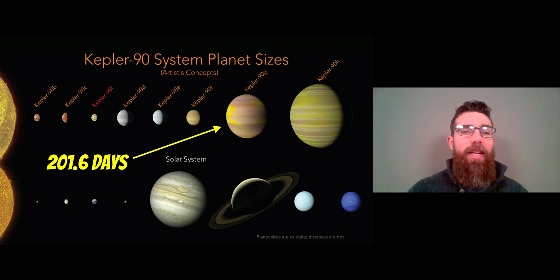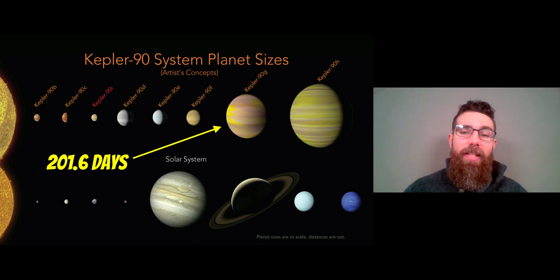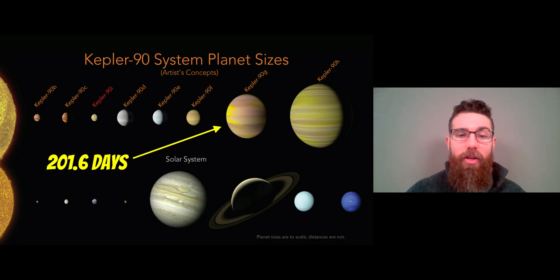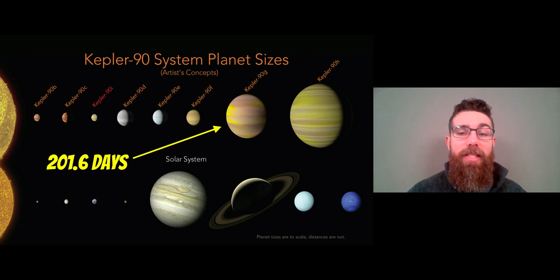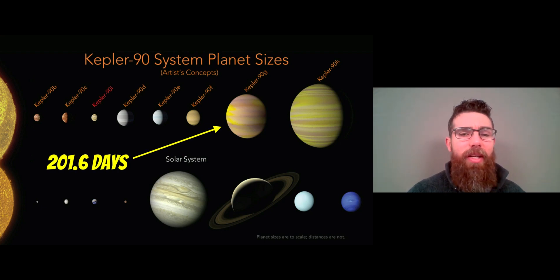So let's take an example to work towards. This is the Kepler-90 system, and we've got quite a large number of planets here. Let's have a look at Kepler-90g, which is a fairly large planet — it has an orbital period of 201.6 days, found from the time between the detected transits. Let's try and find its semi-major axis from that.